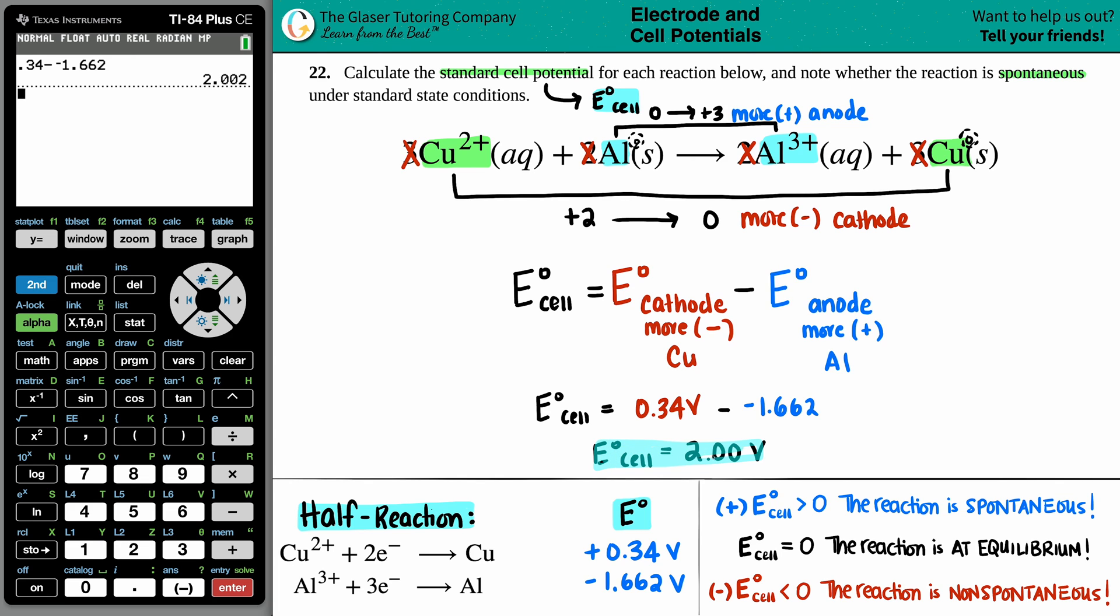Now I just have to say, well, is it spontaneous or not? Well, that all comes down to knowing the charge of the E cell. If your E cell is a positive value, greater than zero, it's spontaneous. And then if your E cell is a negative value, it's less than zero, it's non-spontaneous.